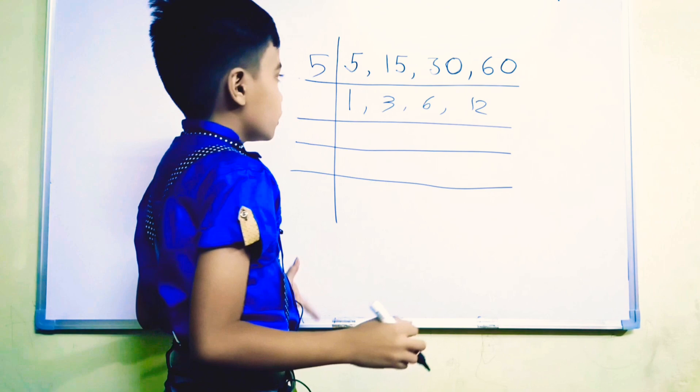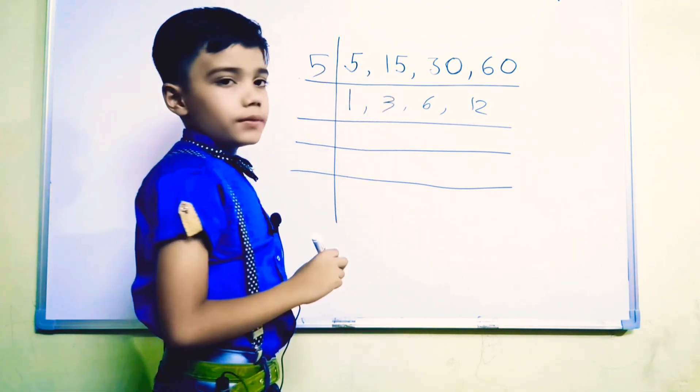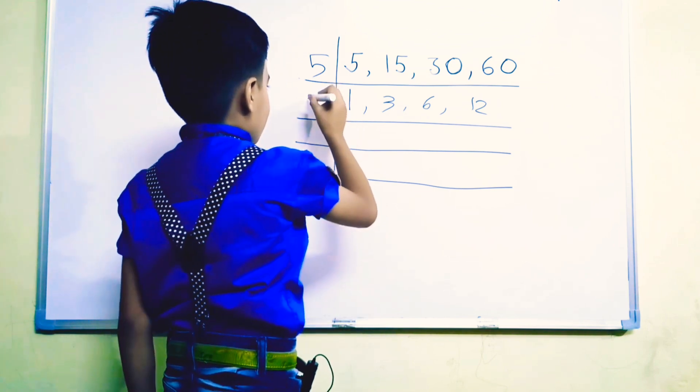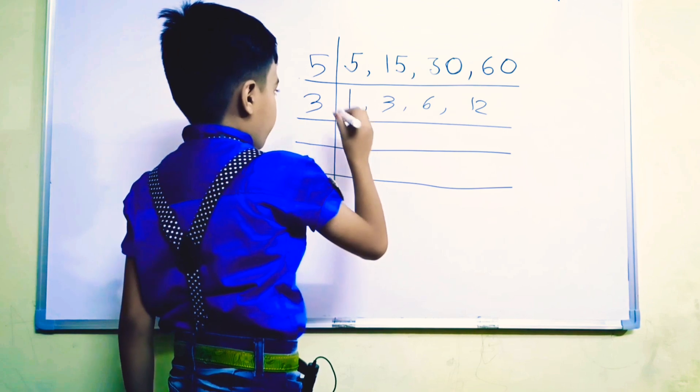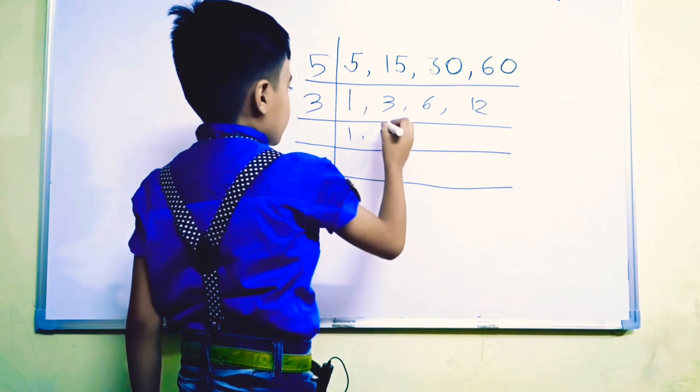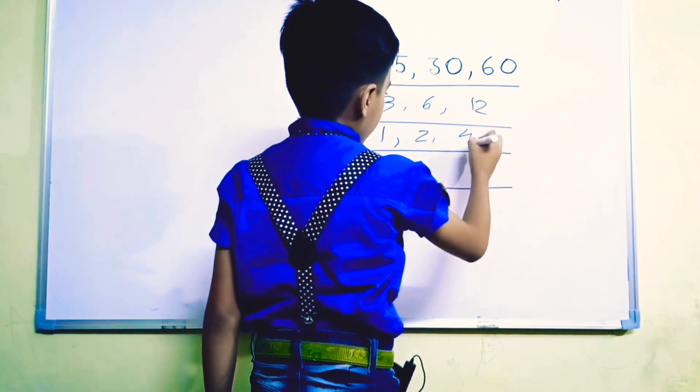Think a number which is divisible by 3, 6 and 12. 3 is divisible by all of these numbers. 1 will be as it is. 3 ones are 3, 3 twos are 6 and 3 fours are 12.